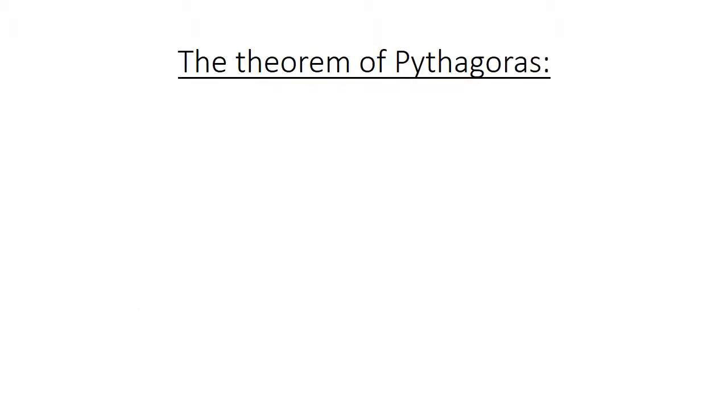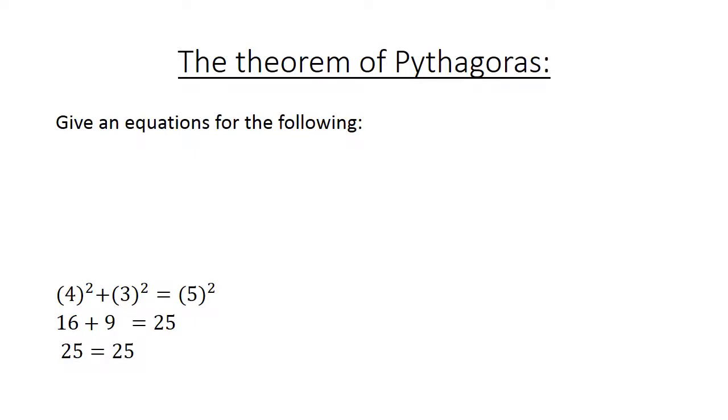The theorem of Pythagoras. Give an equation for the following. We have 4 to the power of 2 plus 3 to the power of 2 equals 5 to the power of 2. 16 plus 9 equals 25. And if we calculate on both sides 25 equals 25.